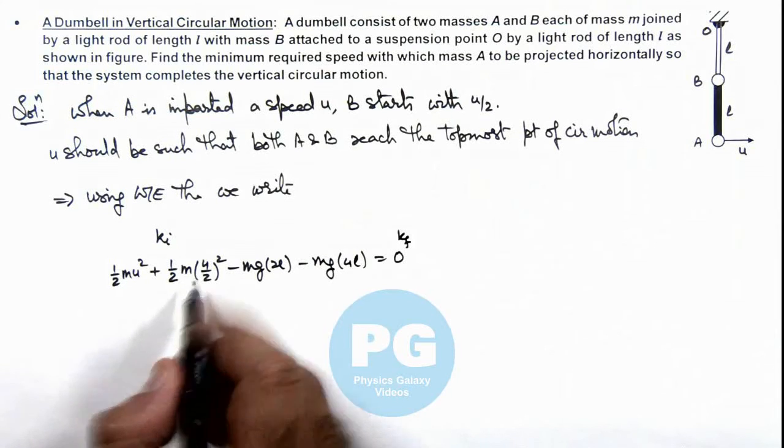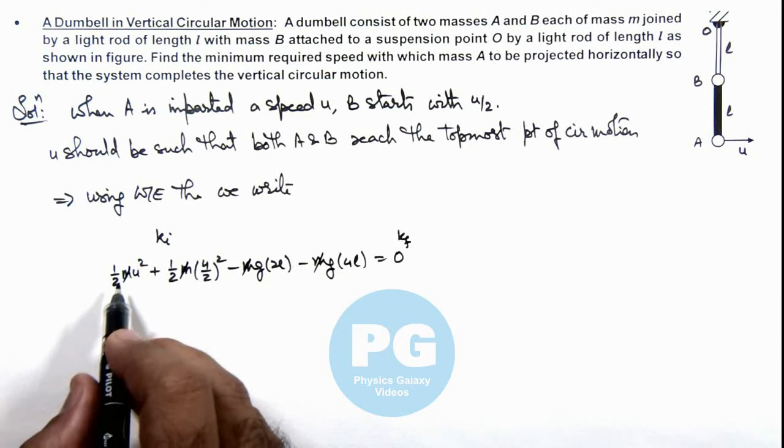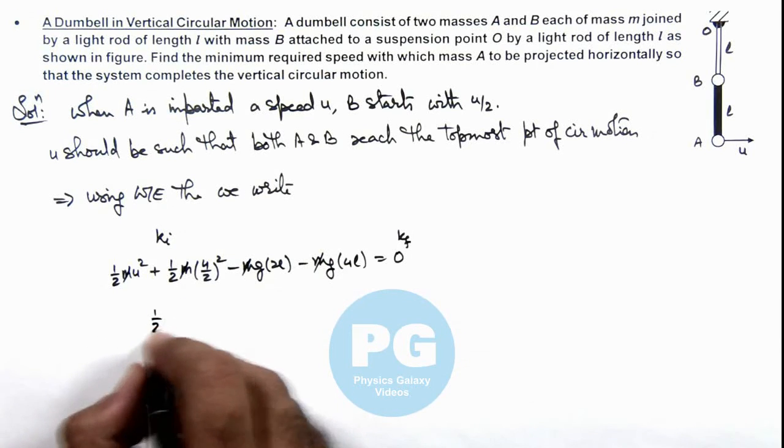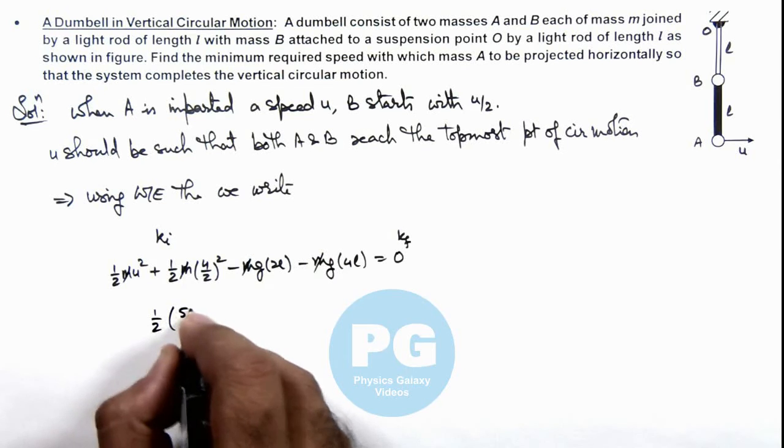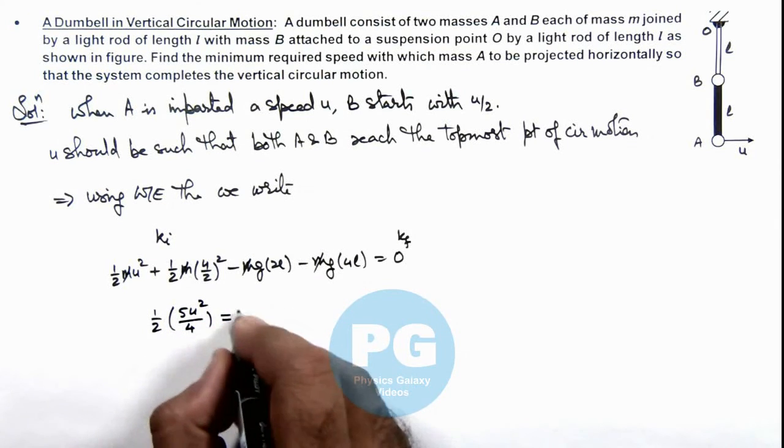So in this situation, m gets cancelled out. In further simplifying, we can see it is u² + u²/4, so this is (1/2)(5u²/4) is equal to 6gl.